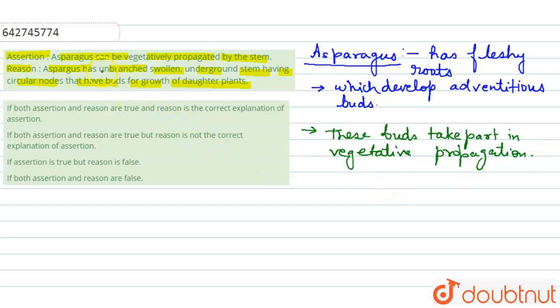Right, so here what is the assertion? Asparagus can be vegetatively propagated by the stem, so this is wrong here. Okay, and reason: asparagus has unbranched swollen underground stem having circular nodes. So reason is also wrong here.